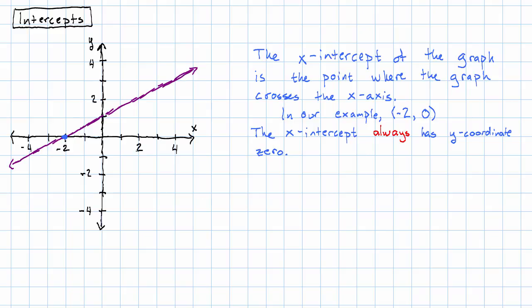However, the y-intercept is the same thing the other way around. The y-intercept of the graph is the point where the graph crosses the y-axis. In our graph, it's this point right here. So what are its coordinates? The y-coordinate is positive 1. Right here is positive 1 on the y-axis. What's the x-coordinate? Well, it's 0.